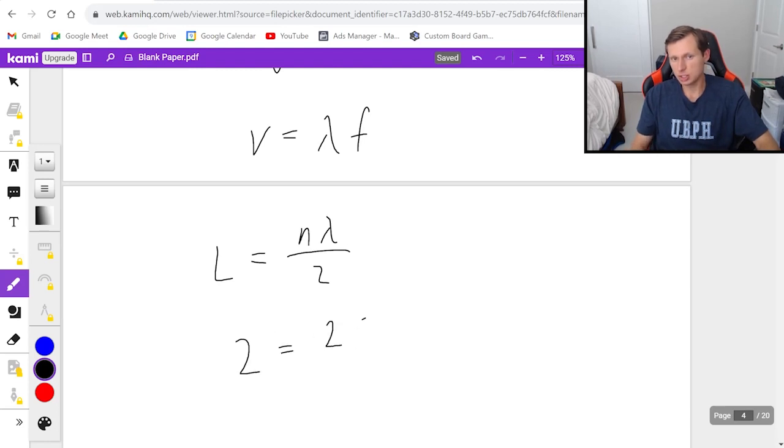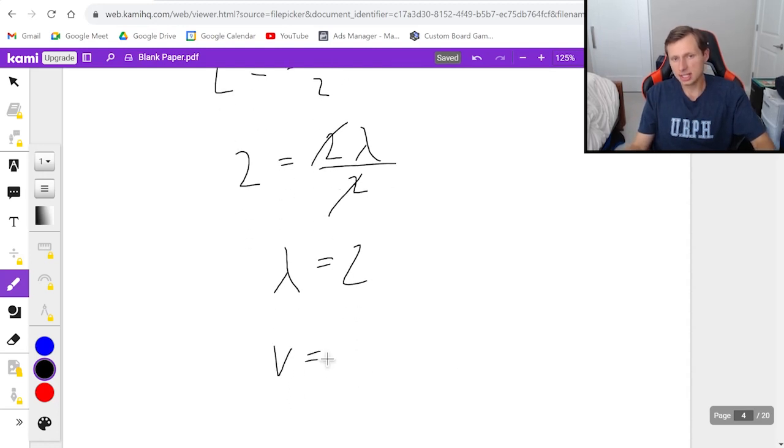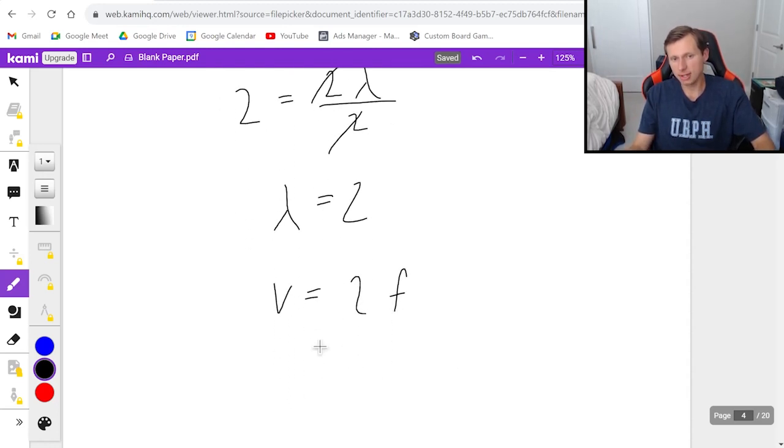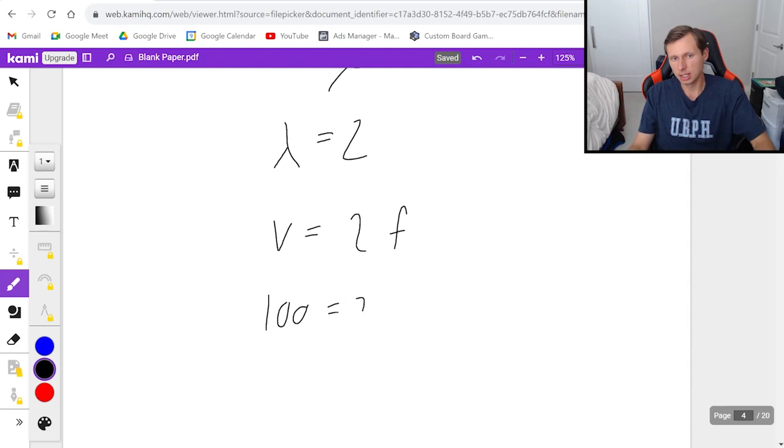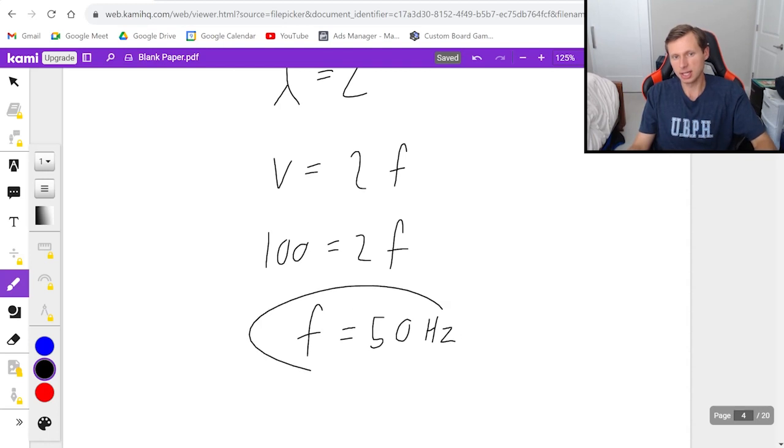L is 2, n is 2, everything's 2. And now to solve for lambda, these 2s cancel and lambda just equals 2. Isn't that nice? So now velocity is equal to 2f. And we know velocity is 100. So it looks like the frequency, divide both sides by 2, frequency must be 50 hertz. And there we go.